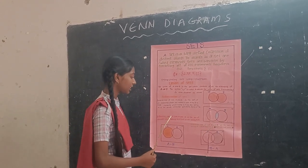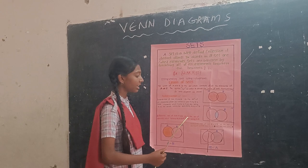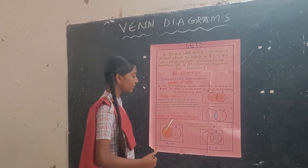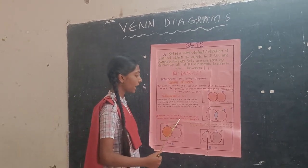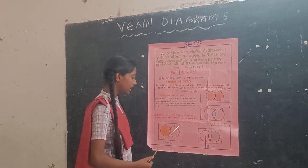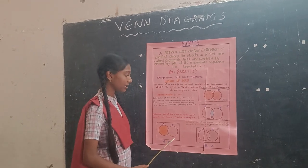The difference of sets A and B is the set of elements which belong to A but do not belong to B. This is the Venn diagram of A minus B.